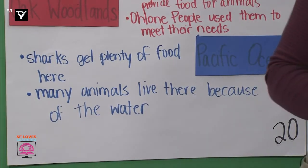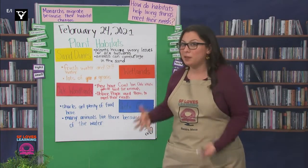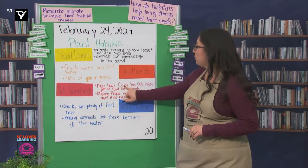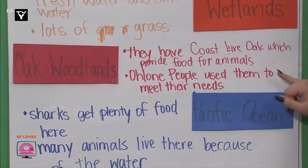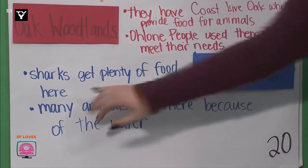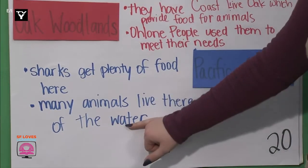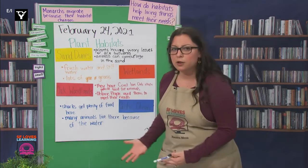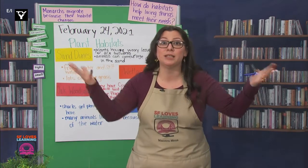We learned a lot with our notes, but let's reread them to make sure we review our learning and see if we can answer our question. Today we added oak woodlands: they have coast live oak, which provides food for animals; Ohlone people use them to meet their needs. Then for the Pacific Ocean: sharks get plenty of food here; many animals live there because of the water. So, what do you think, scientists? How do these notes from our work Monday, Tuesday, and Thursday help us? How do habitats help living things meet their needs?